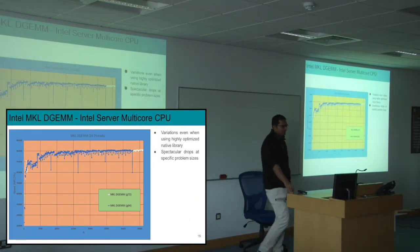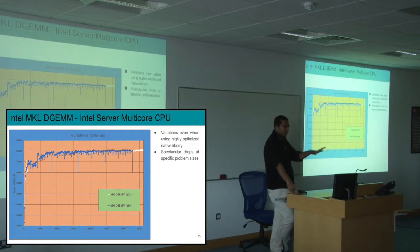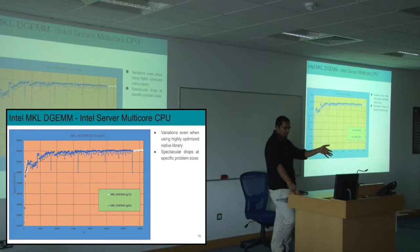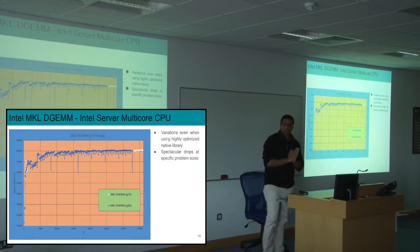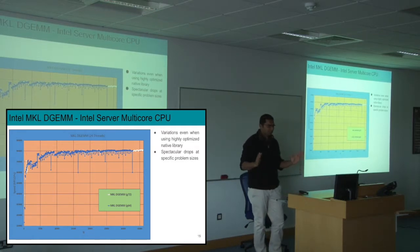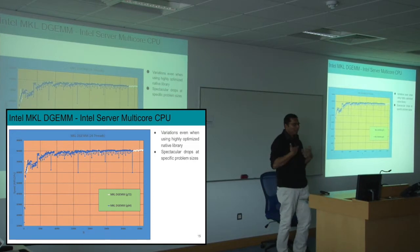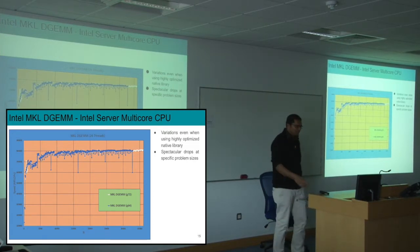Now we come to Intel MKL. You might say Intel MKL is the highly optimized native version and should be smooth — it's not. There are variations, but you can also see spectacular drops at specific problem sizes. These occur at very specific intervals. What's usually happening is the threads are throwing each other's data out of cache, trying to get their work done.